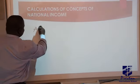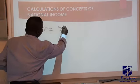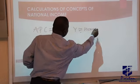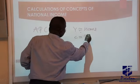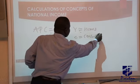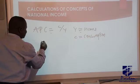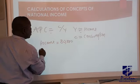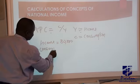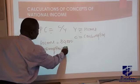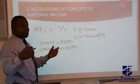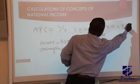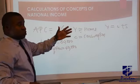APC means C over Y. Y represents income and C represents consumption. For example, if your income is equal to 80,000 naira and your consumption level is 40,000 naira, don't forget you have two options: it is either you save or you consume. That is why income equals C plus S.